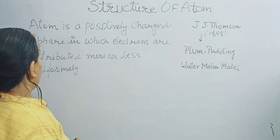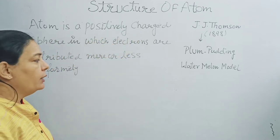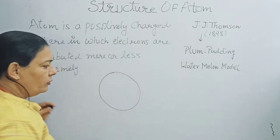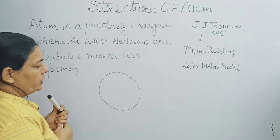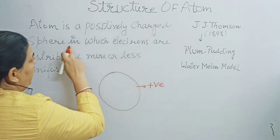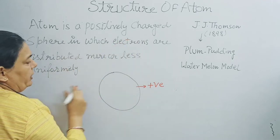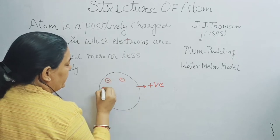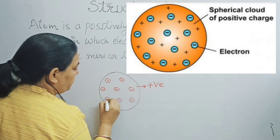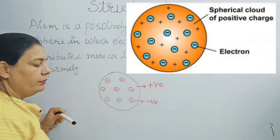According to this model, the atom is a positively charged sphere — we can draw this as a sphere carrying positive charge in which electrons are distributed more or less uniformly. Let us suppose these are the electrons distributed in this positively charged sphere. This was the model given by Thomson.